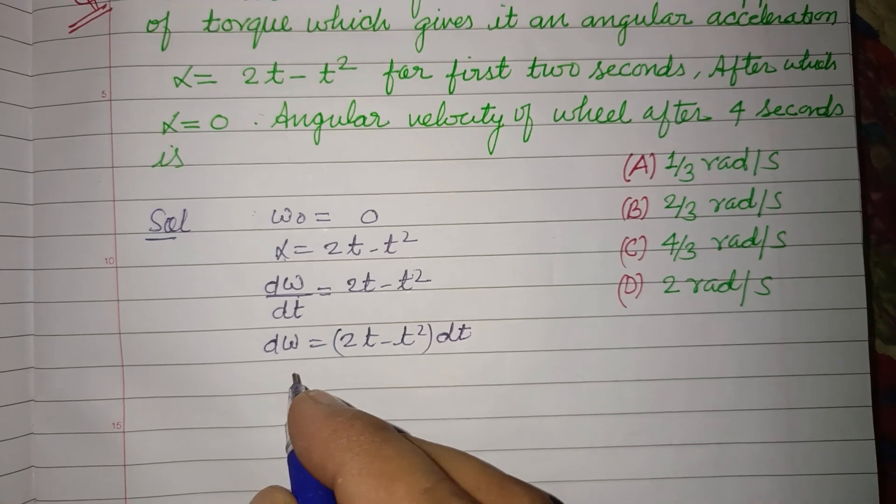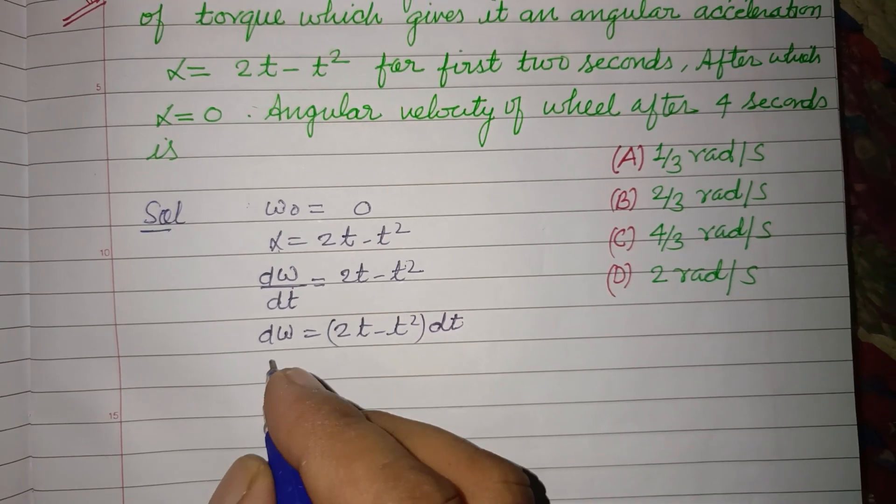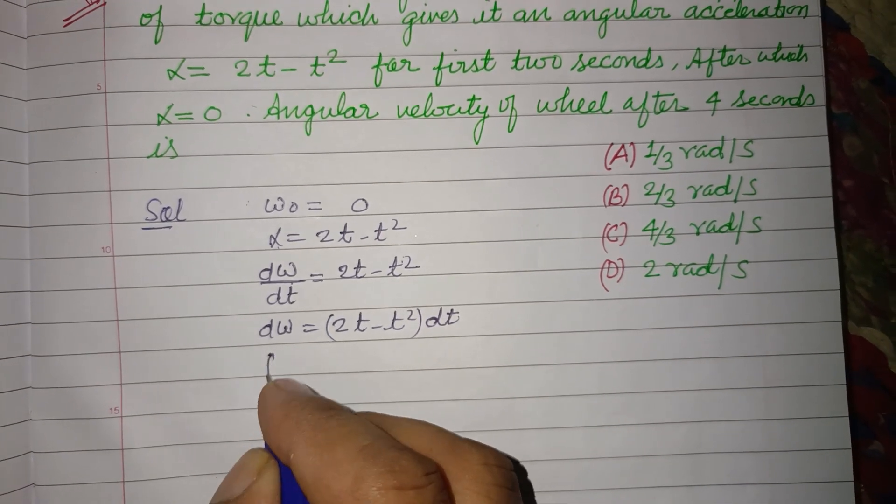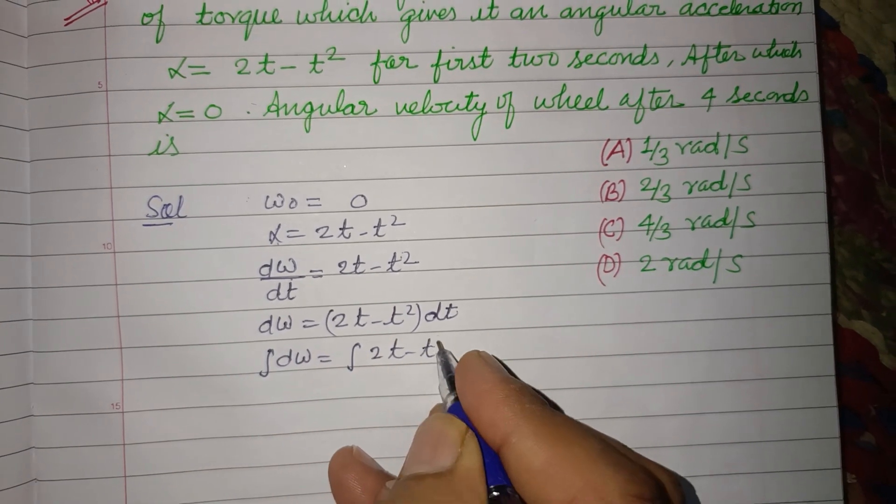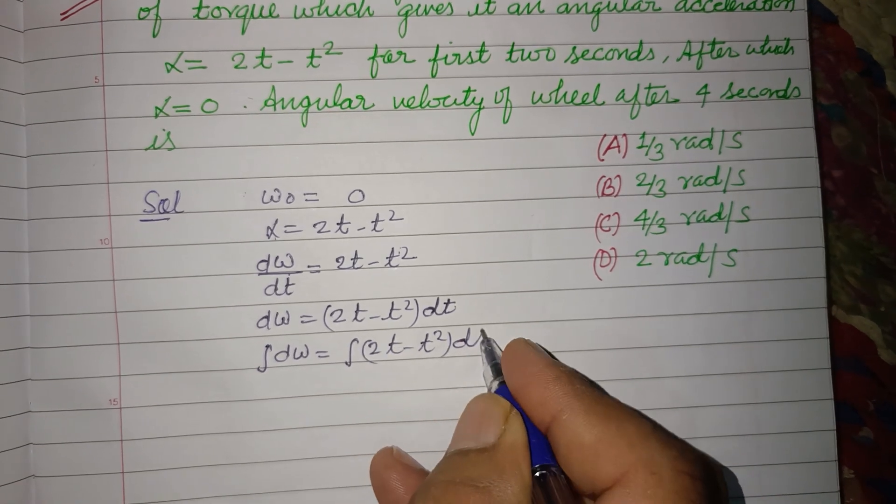Now integrating this, ∫dω = ∫(2t - t²)dt.